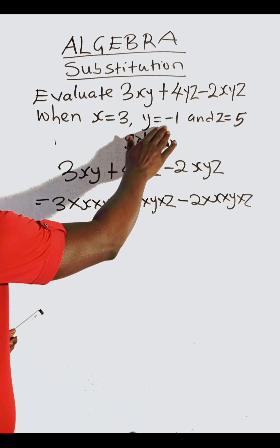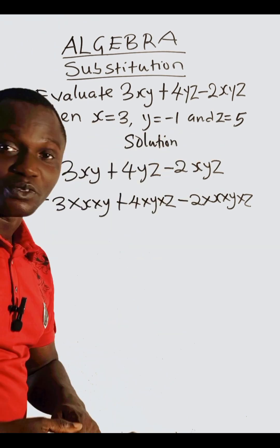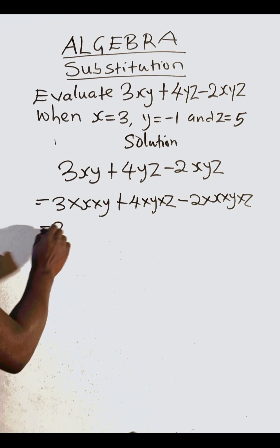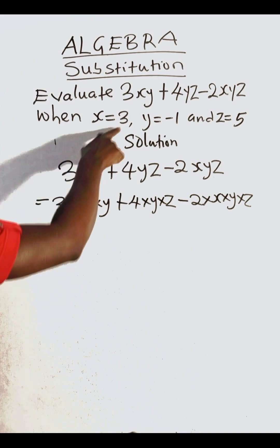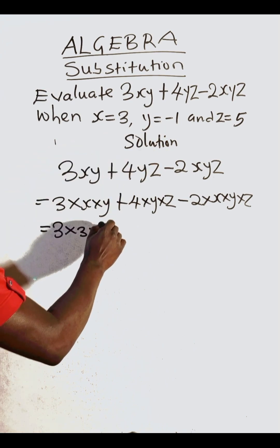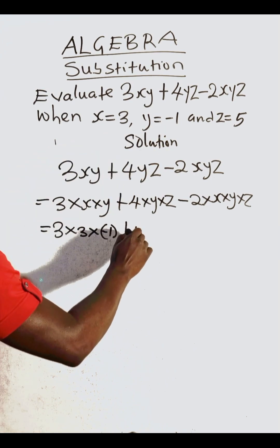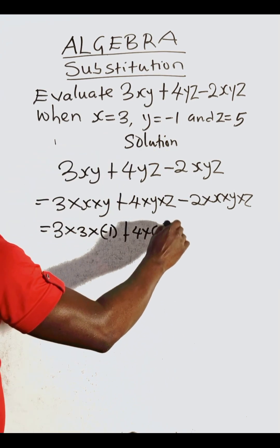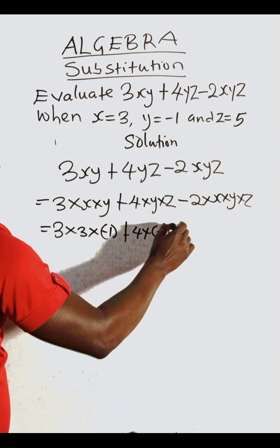Now let's substitute. x should be three, y should be minus one, and z should be five. So we substitute three times x, replace x with three, then y with minus one, plus four times minus one times z is five.